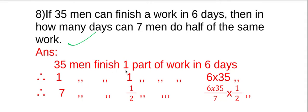35 men finish one part of work. We assume total work is equal to one part. So 35 men finish one part, that is total work, in six days, as given.